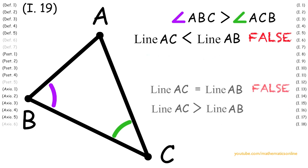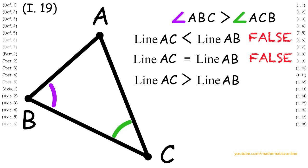So now we are left with two false statements, and the remaining statement must be true. Line AC is greater than line AB.